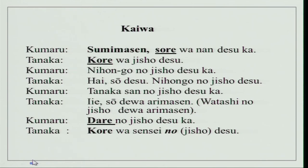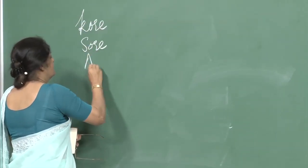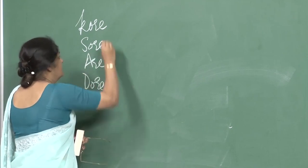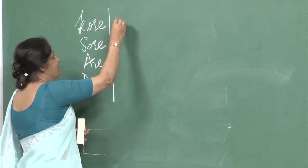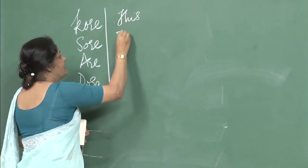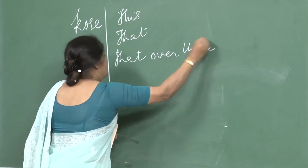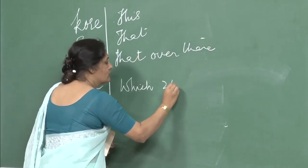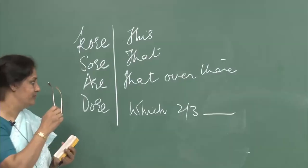Sumimasen, sore, sore wa nan desu ka — these are new words. Kore, sore, are, and dore. Now these are demonstrative pronouns. Kore means 'this,' sore means 'that,' are means 'that over there,' and dore means 'which' of two or three objects being shown.